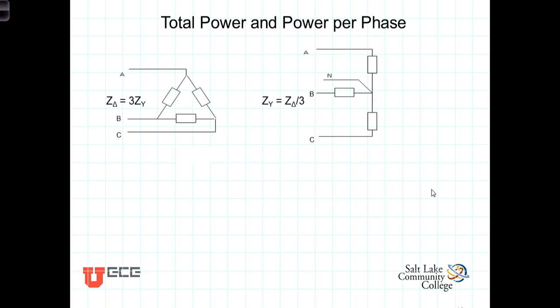Loads are generally specified in terms of power. That power term may represent the real or average power — the power actually delivered out of the circuit — so that would be our average power P, in watts or horsepower. It may also be given in terms of its electrical demand S, that's complex power, specified in volt-amps. But in either case, when a three-phase load is specified in power, the number typically represents the total power of all three phases. So if we're talking about a 15 horsepower motor, we're talking about all three phases combined generating 15 horsepower.